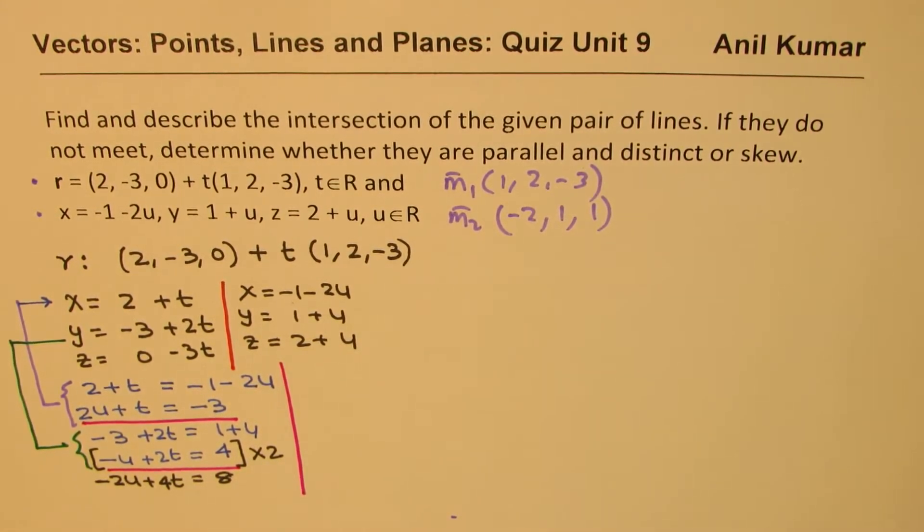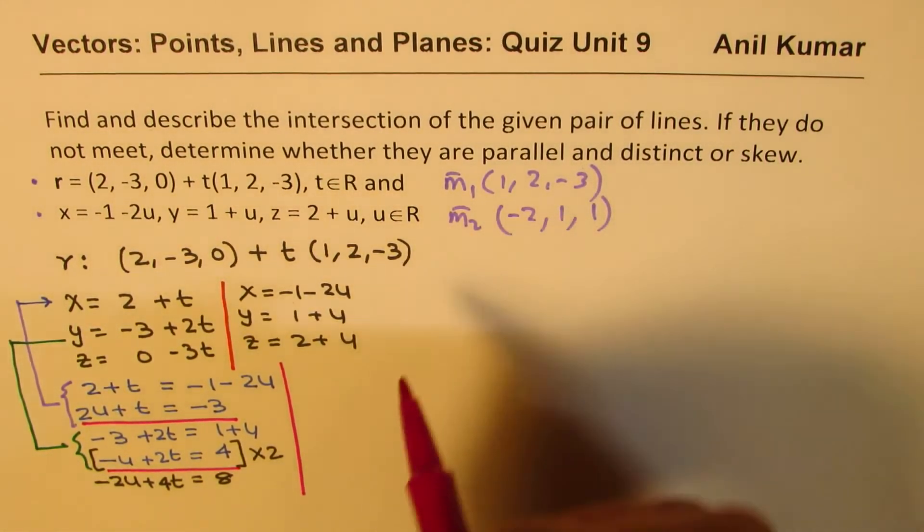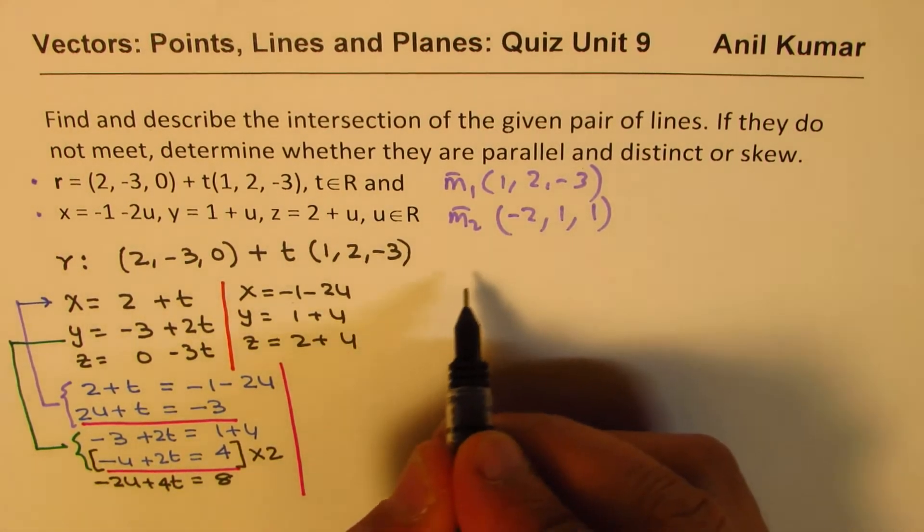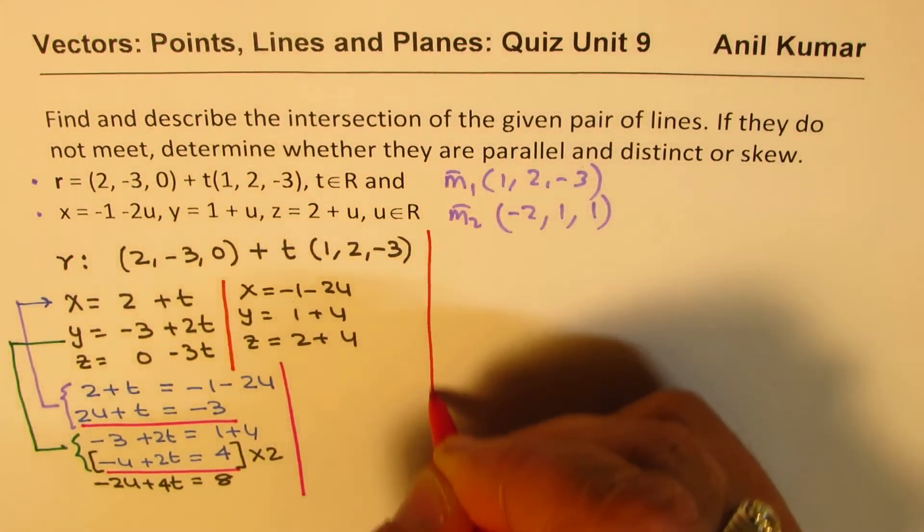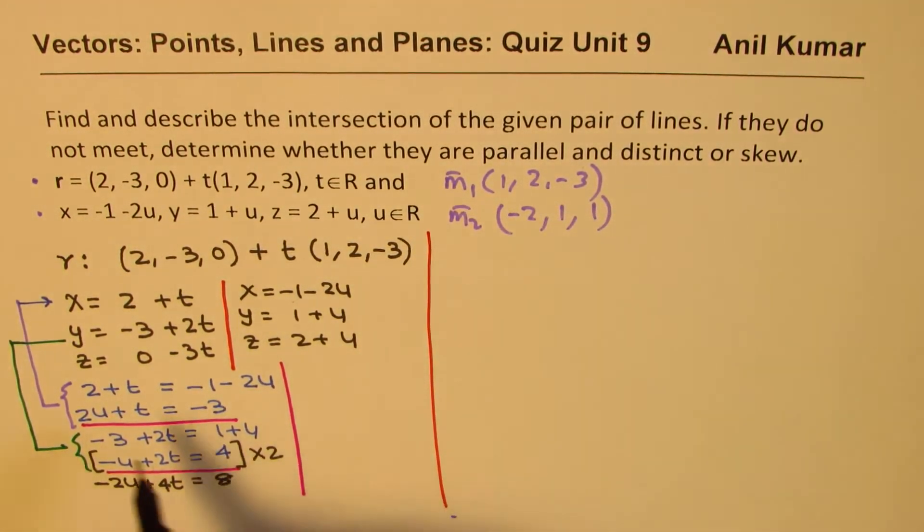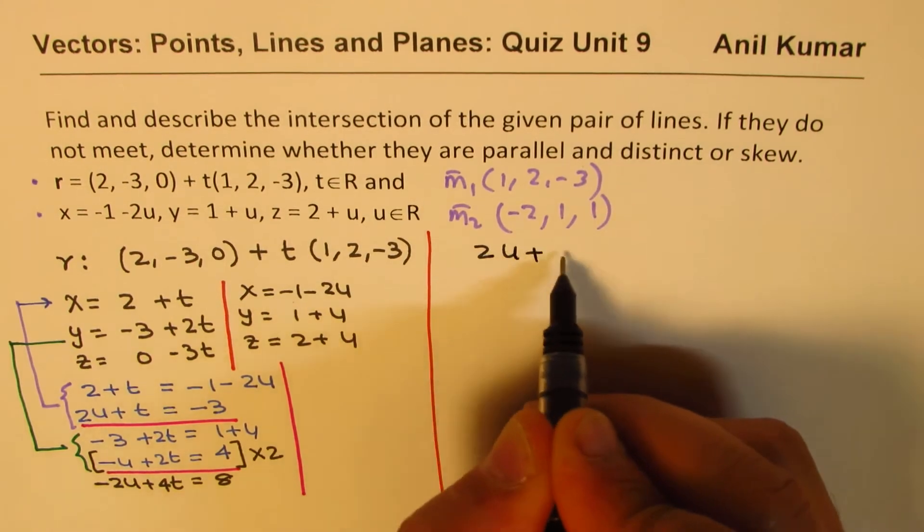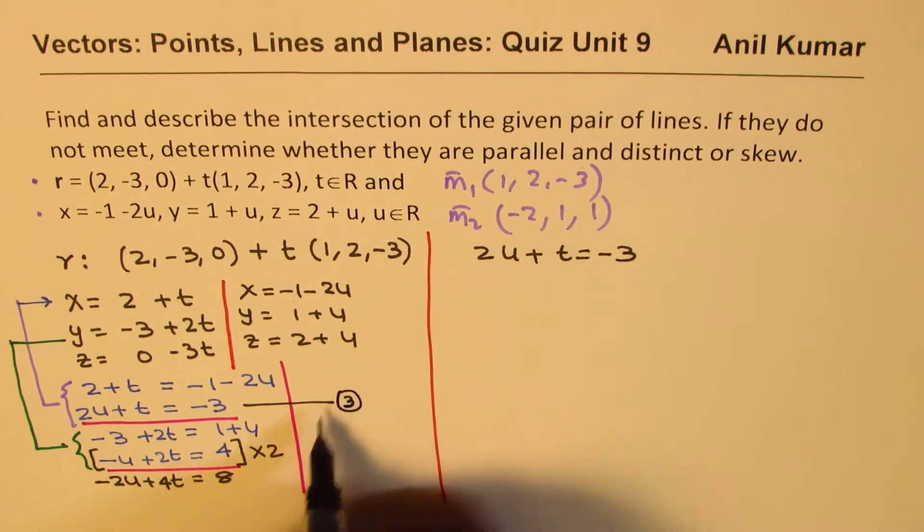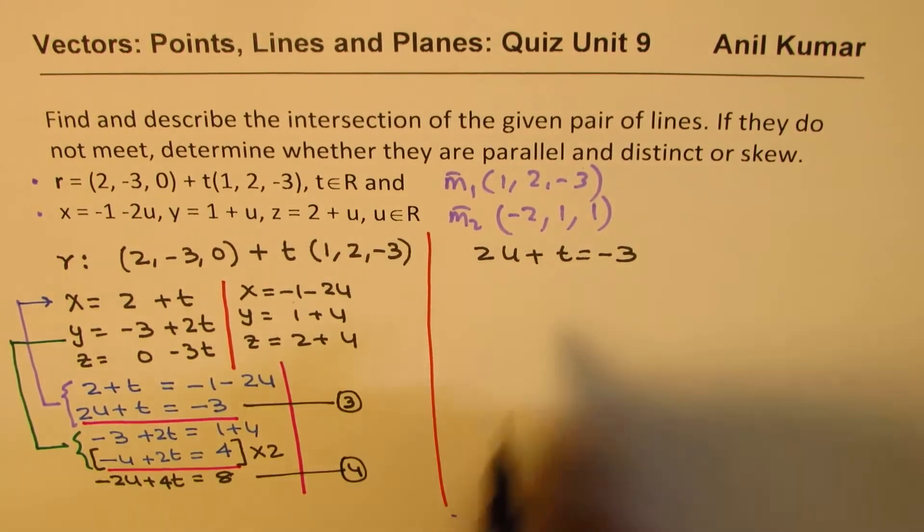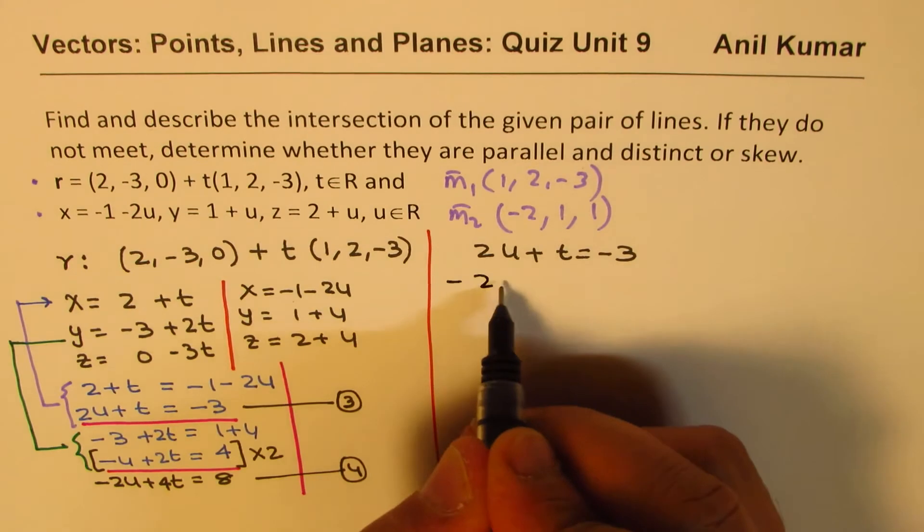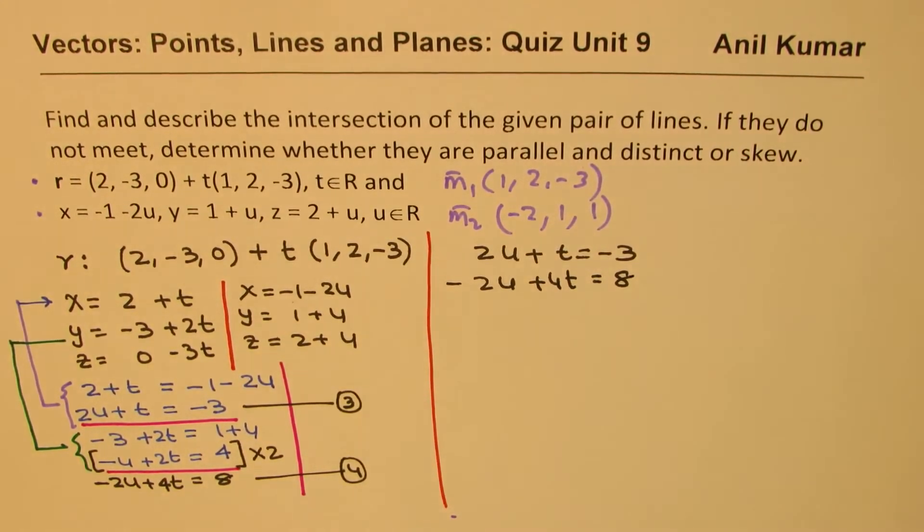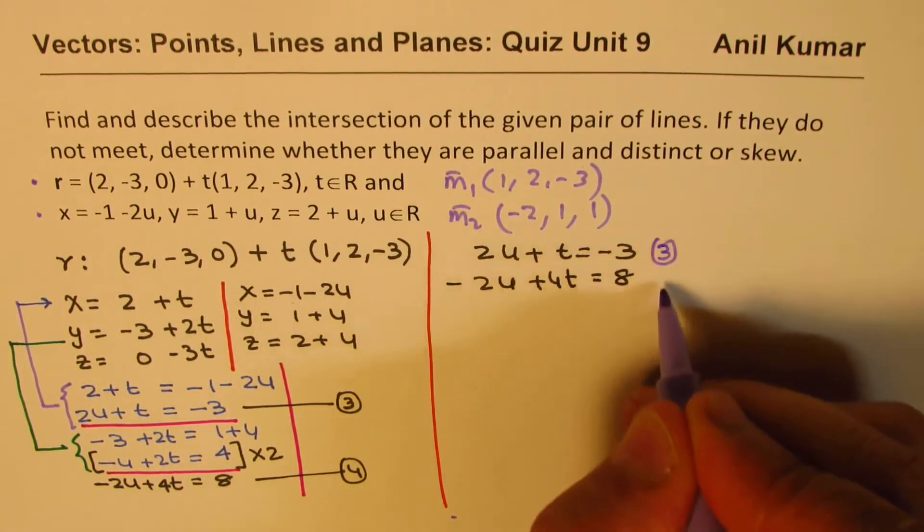And now, what I am going to do is, let's do it on the right side. So we have this equation. So we have the first equation as 2U + t = -3. Let's call this equation as 3, and we'll call this as 4. And the fourth equation as -2U + 4t = 8. So these are our equations 3 and 4.